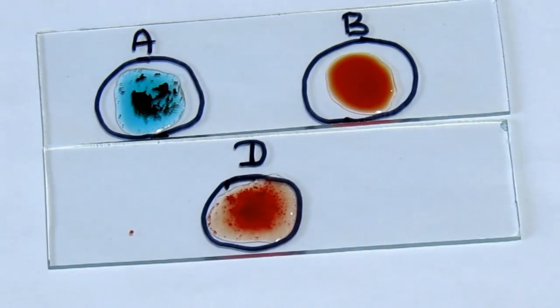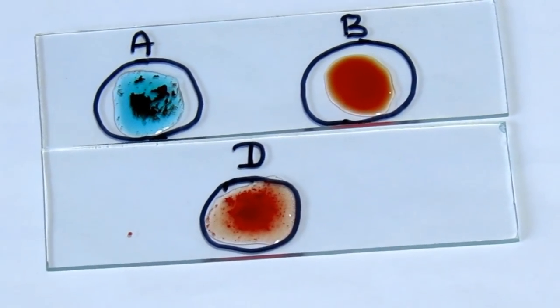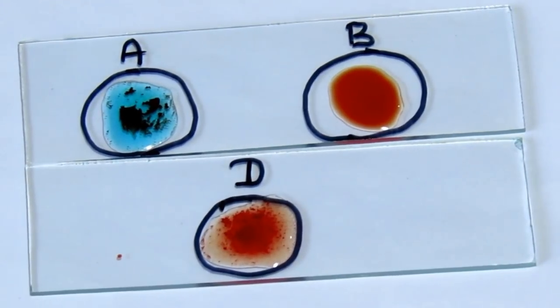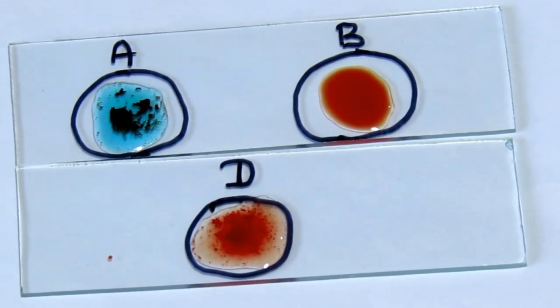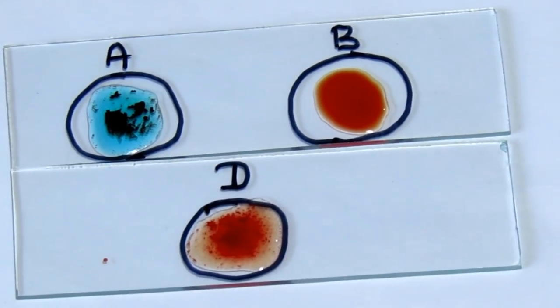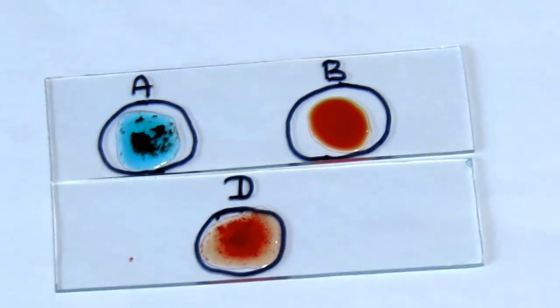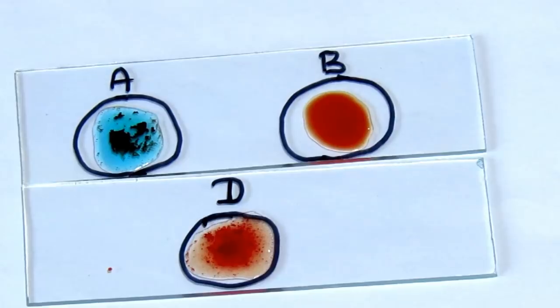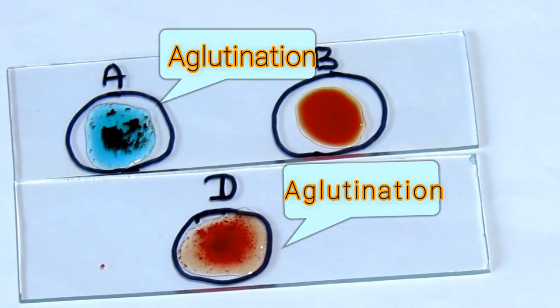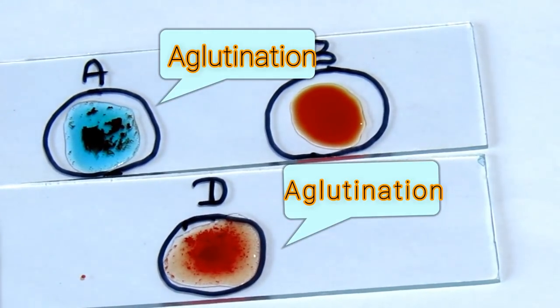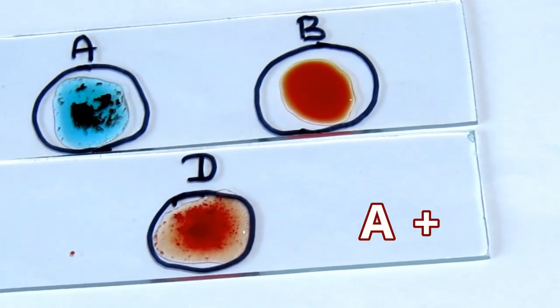See the agglutination. This agglutination indicates blood group. Agglutination at D indicates the positive blood group. As you can see here, the agglutination takes place at A and D, so the blood group is A positive.